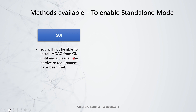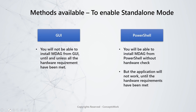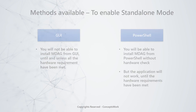Via the GUI, you will only be able to install once you meet the hardware configuration — that means once the PC has four cores of processors and at least 8 GB of RAM. When it comes to PowerShell, you can install it, but unfortunately the feature is not going to work because the hardware requirements have not been met.